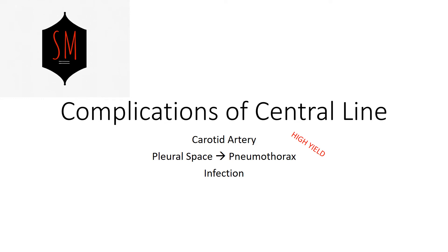Hopefully you've reviewed the indications of central line placement. Now we're going to talk about complications of central line placement. There are three big ones you need to know: going into the carotid artery, going into the pleural space causing a pneumothorax, and infection. That's it — three complications of central line access: carotid artery, pneumo, and infection.